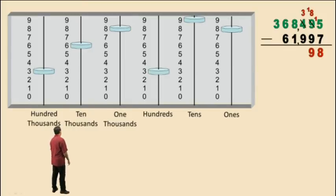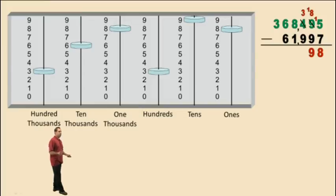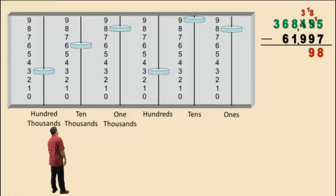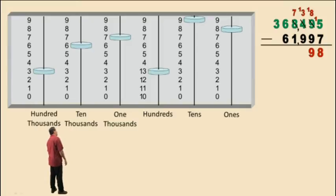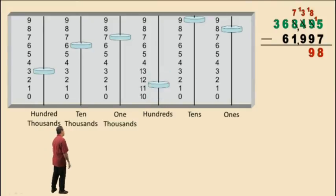Now in our hundreds column, we have 3 subtract 9. Again, we cannot perform the subtraction — we cannot get negative results — so we have to borrow from our thousands column. Notice our thousands changes to 7, and we now have 13 hundreds because 1 thousand is equivalent to 10 hundreds. Now we can perform the subtraction in our hundreds column: 13 subtract 9 is 4.